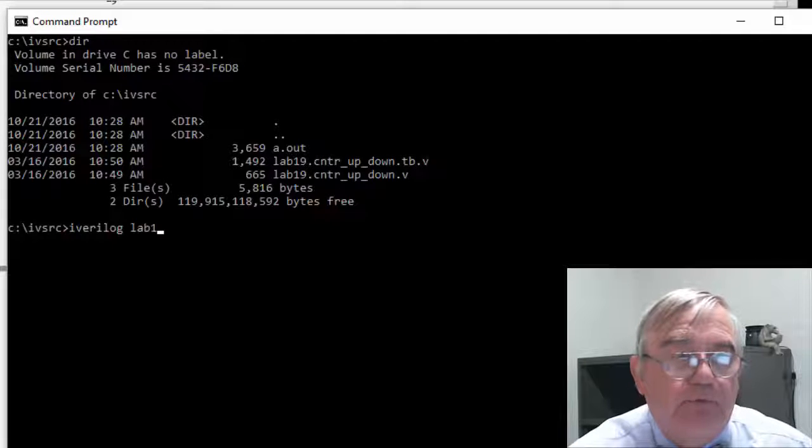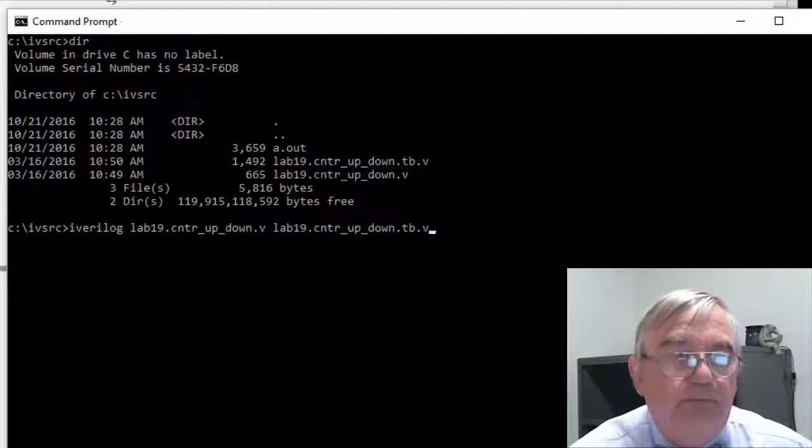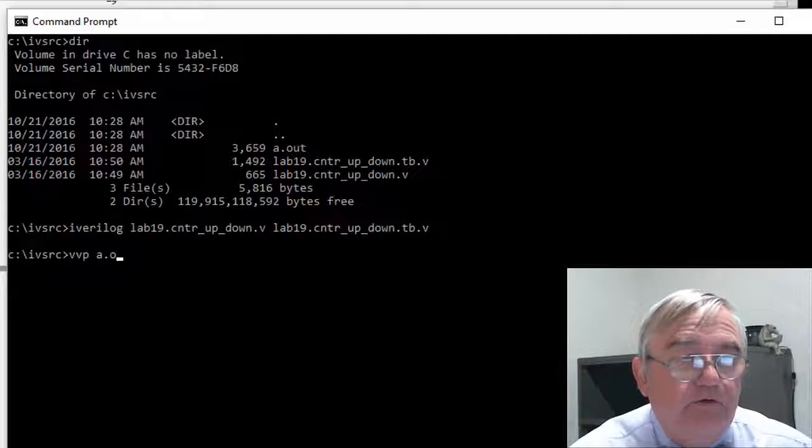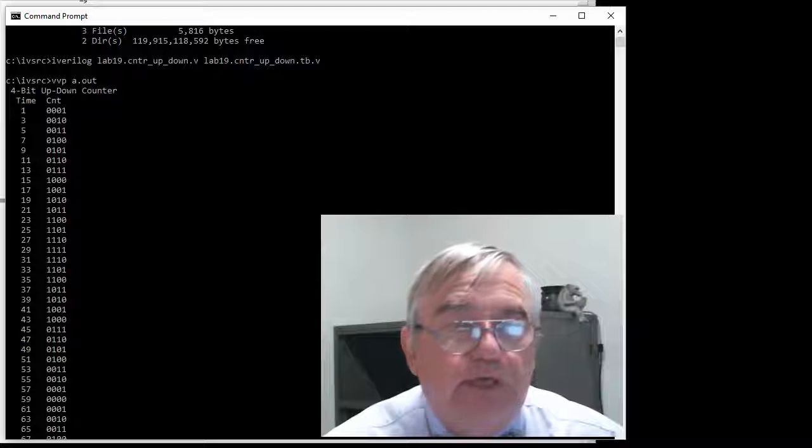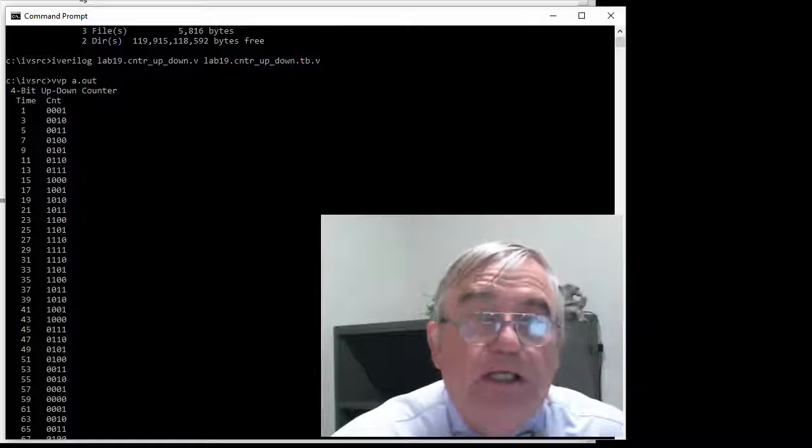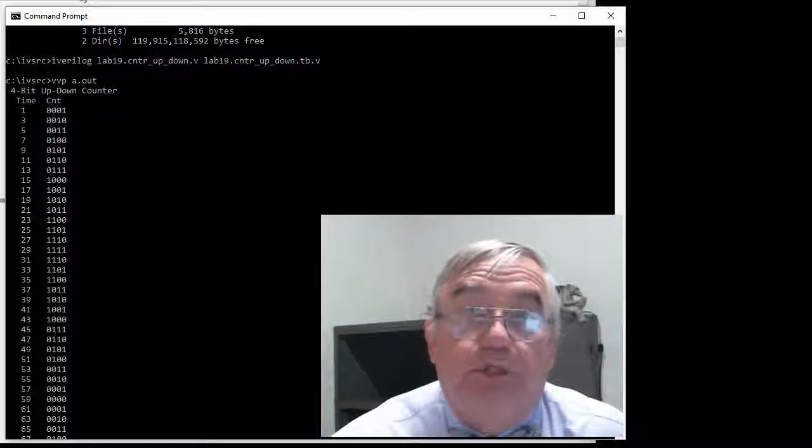iverilog lab19_counter_up_down.v lab19_cntr_up_down_tb.v and it compiled properly. vvp a.out and let me scroll up a little bit and you'll see we do count from 1 up to 1111 and then we start counting down back to 0 and then we count back up.